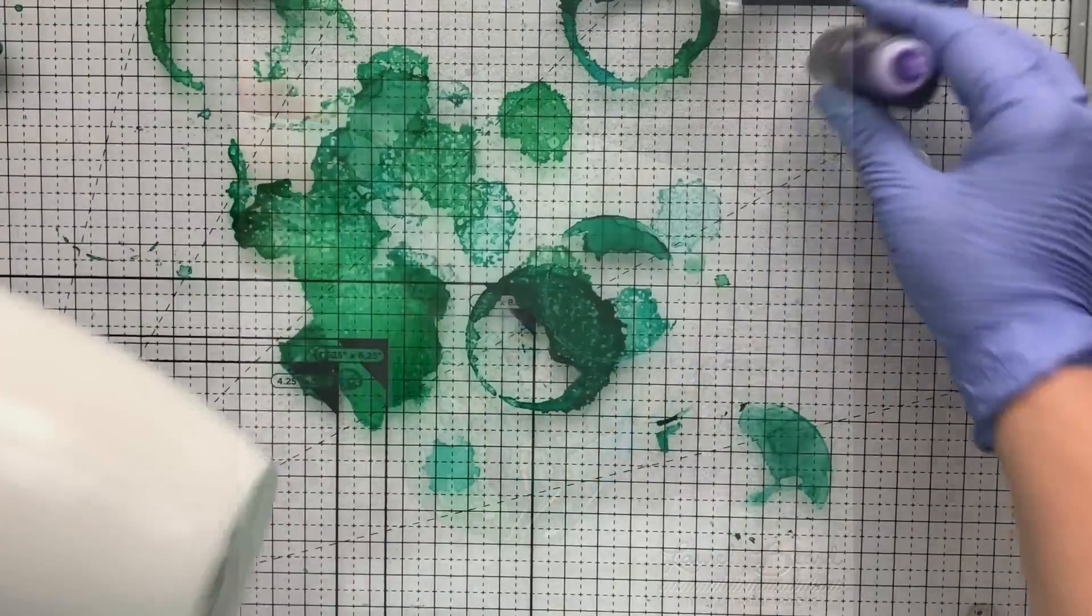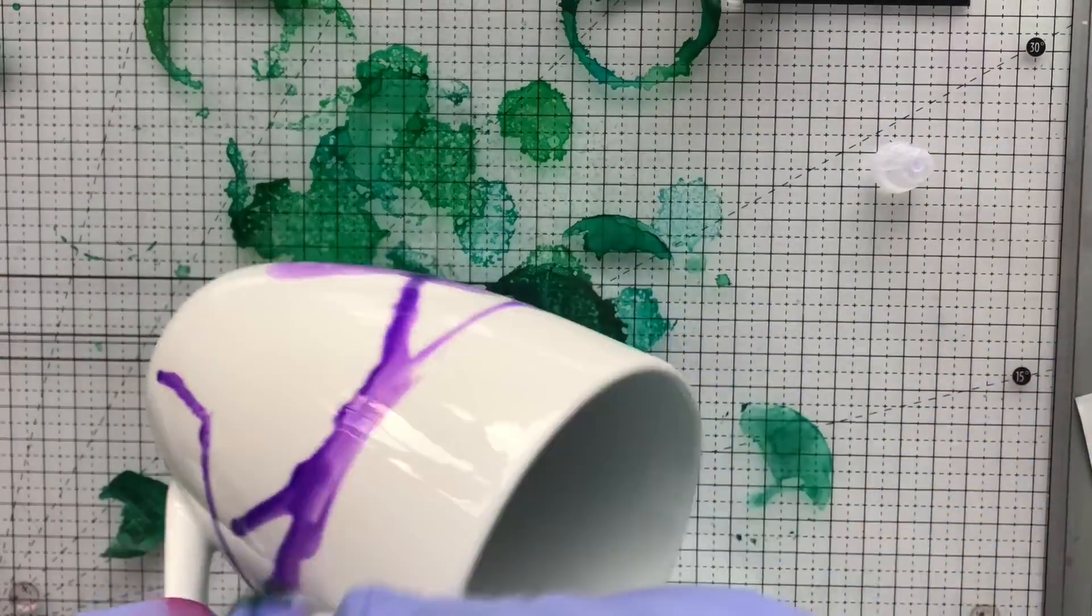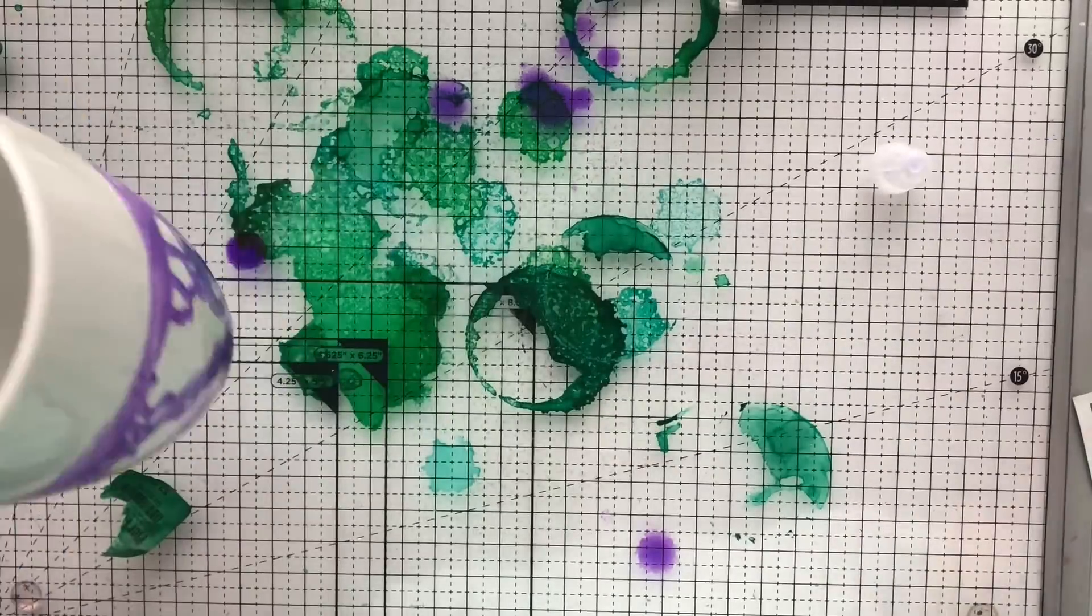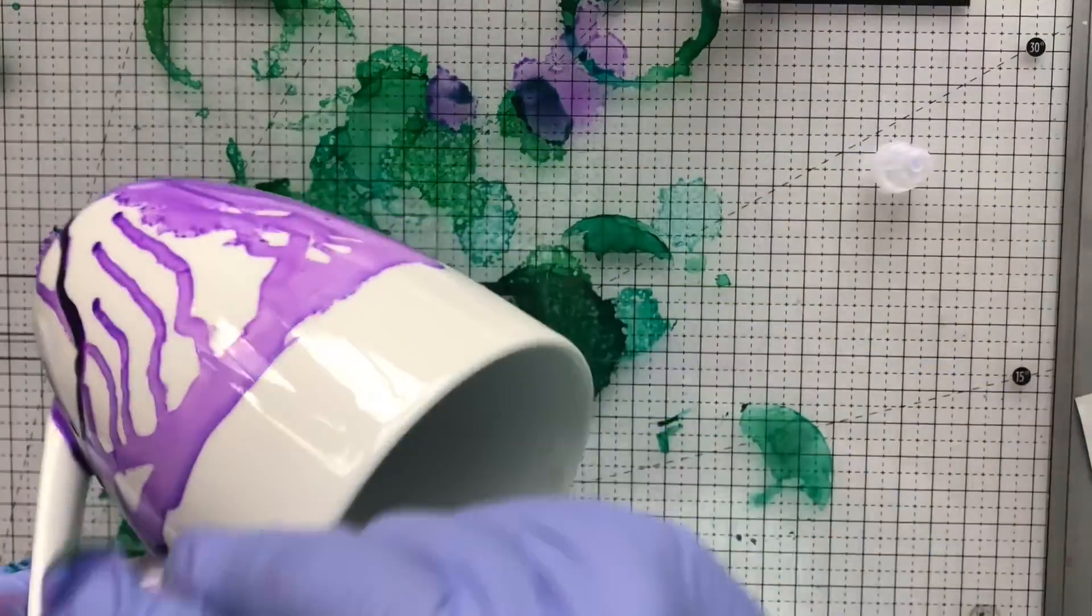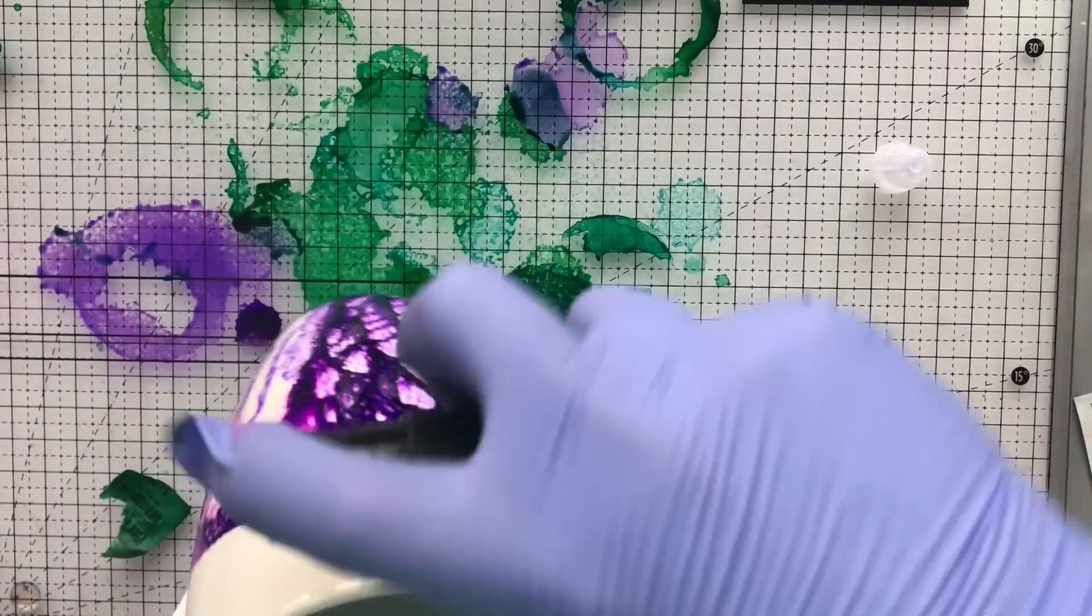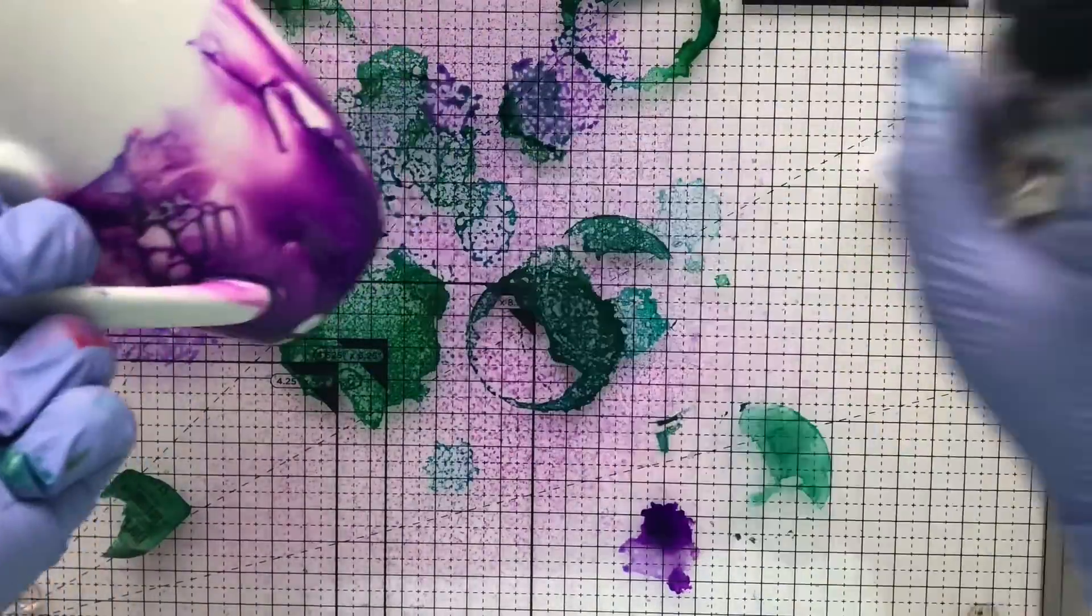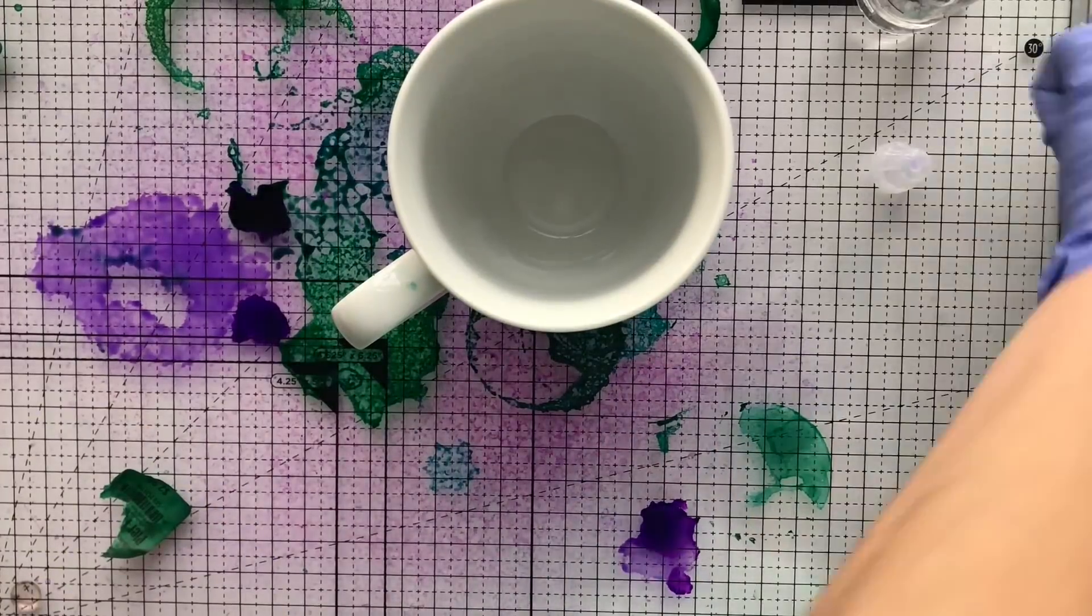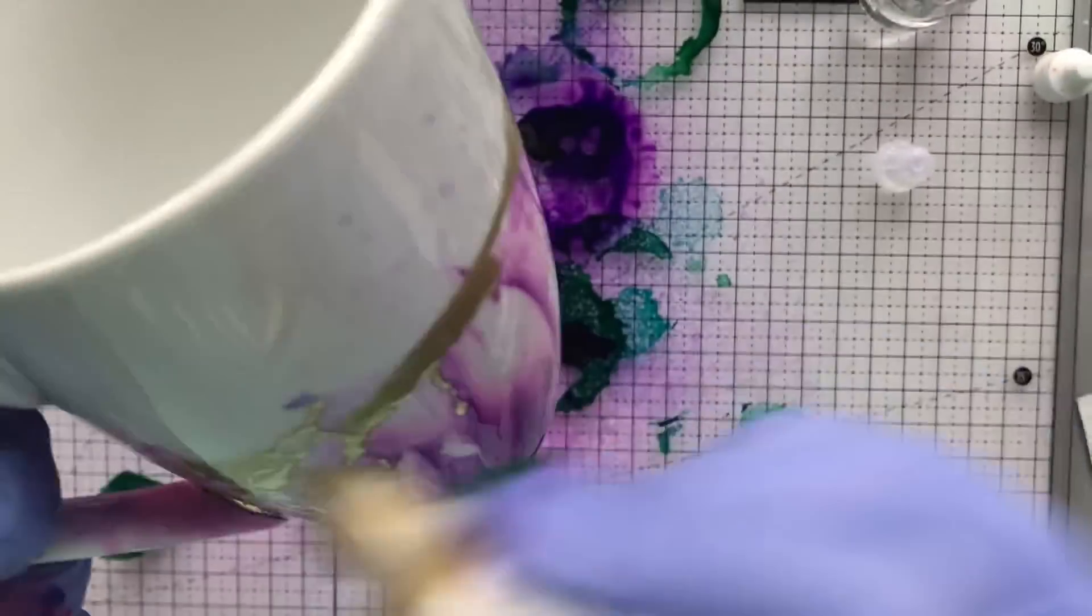All right, let's do one more. I'm going in with two different shades of purple. Again, I keep my cup upright so all of the alcohol ink is flowing down. I had a couple of people ask me if I dipped it. No, I didn't. This is exactly how I made it. I put on the alcohol ink, I spray the isopropyl alcohol and I just keep going until I like the look that I got.